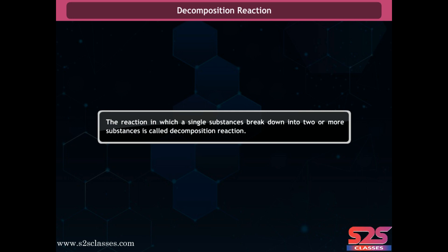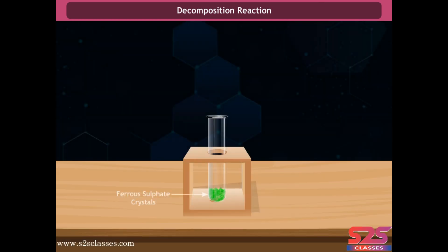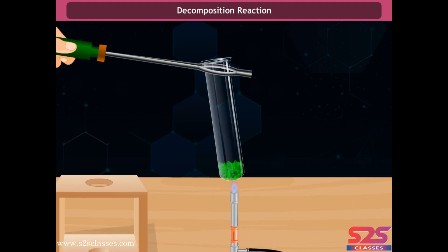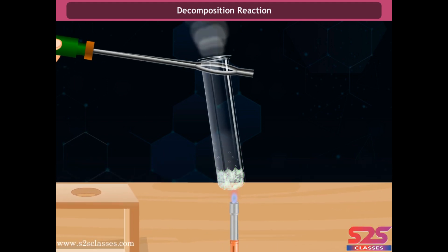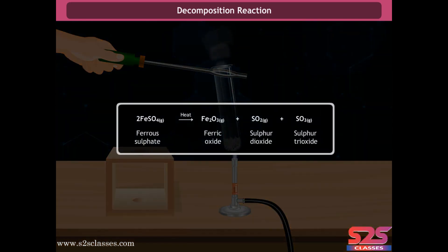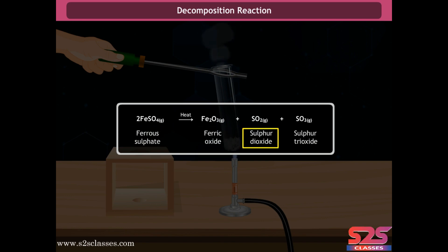A decomposition reaction is one in which a single substance breaks down into two or more substances. Take three grams of green ferrous sulfate crystals in a dry boiling tube and heat it over a burner. Observe the change in color of the crystals. On heating, the color changes and the characteristic smell of burning sulfur is observed. The green crystals of ferrous sulfate lose water on heating, causing the color change. On further heating, it decomposes into ferric oxide, sulfur dioxide, and sulfur trioxide.